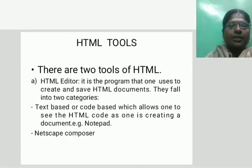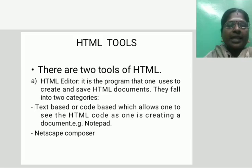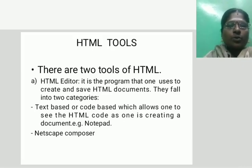HTML tools. There are two kinds of tools. One is the HTML editor. It is a program that one uses to create and save HTML documents. They fall into two categories: text-based or code-based, which allows one to see the HTML code as one is creating a document. Example: Notepad.